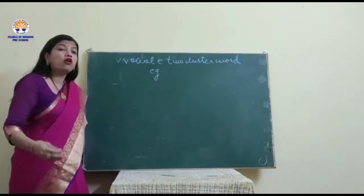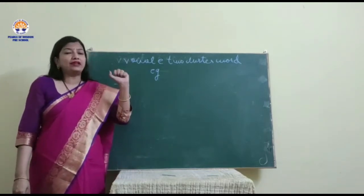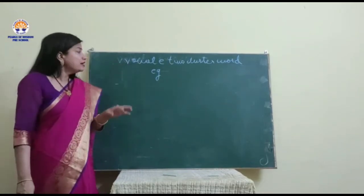Now children, we all know that there are 21 consonants and 5 vowels: vowel A, E, I, O, and U.